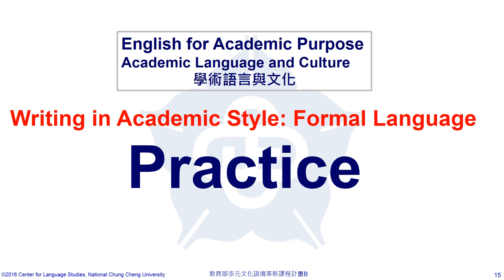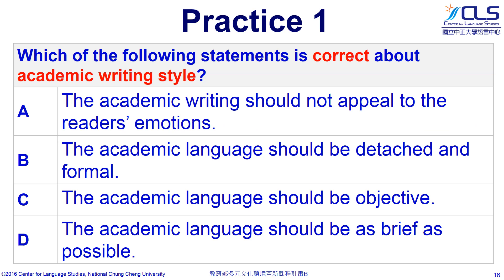Let's check how much we've learned. Choose the correct statements about academic writing style. The first three are correct statements about academic style. In academic writing, being brief is important, but we don't use contractions, nor do we use weak words.